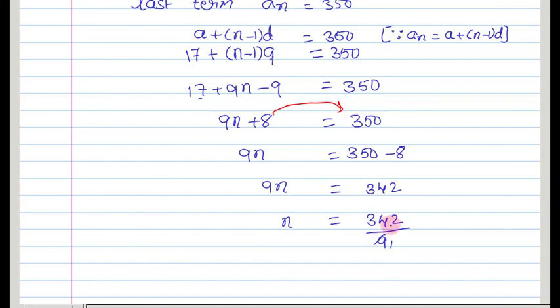9 times 1 is 9, 9 times 3 is 27, then 7 left it becomes 72, 9 times 8 is 72. So n is equal to 38.